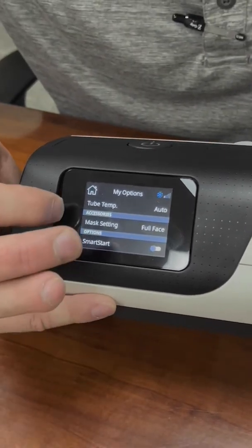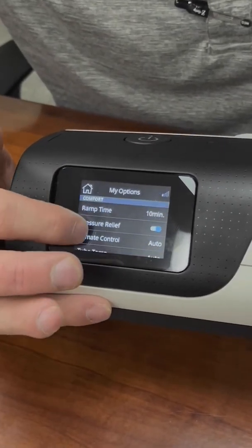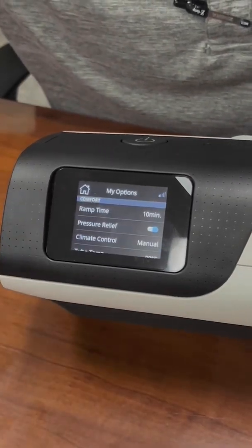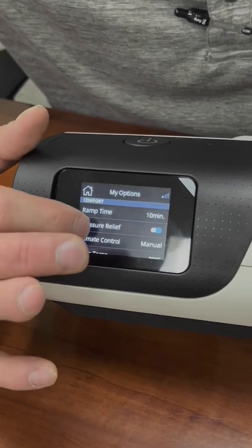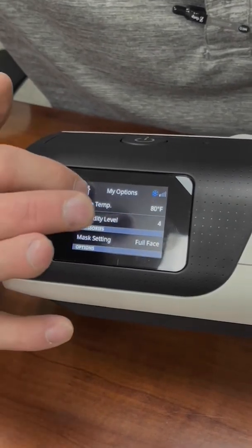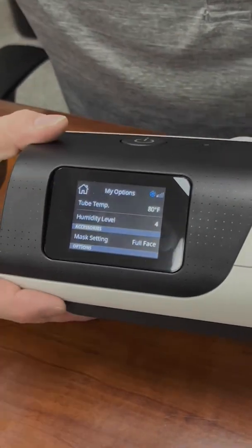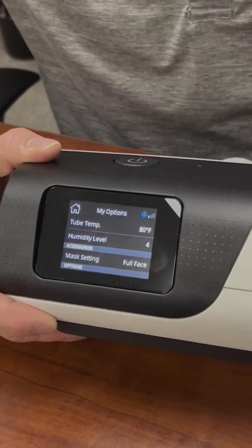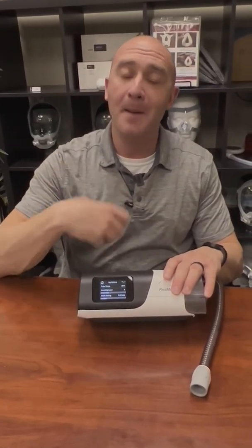But when we set this to manual, you now have two options that you can change. You'll notice below them there's tube temperature and humidity level. So essentially what humidity level is, is how hot this heating plate gets on the side. The hotter that gets, the faster the evaporation rate, so the more humidity you're breathing in. But you don't have that condensation protection like you do in auto. So it's a little tricky to get that dialed in.